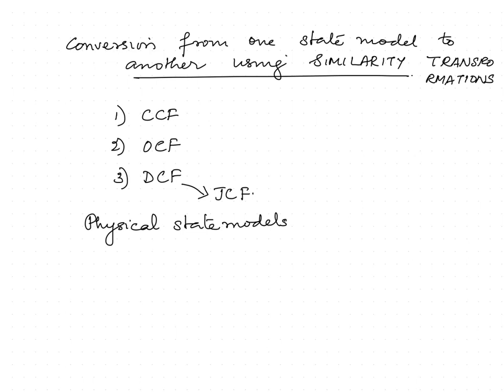In many cases, during the analysis of state models, it might be required to convert a given state model to another one. For example, controllable canonical form is very essential for state feedback and for the controllability test. If a state model is in controllable canonical form, state feedback design and controllability testing become much easier. So one may need to convert different state models to one of the canonical forms using similarity transformation.